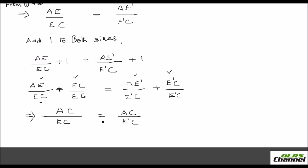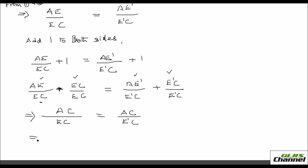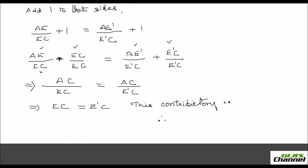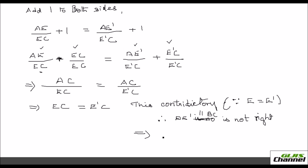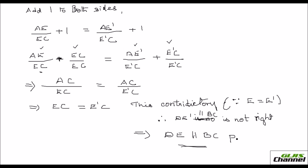Since the numerators are equal, the denominators must be equal too: EC equals E dash C. This is possible only if E and E dash are the same point, which is contradictory to our assumption. Since E is not equal to E dash, our assumption that DE dash is parallel to BC is false. Therefore, DE is parallel to BC. Proved.